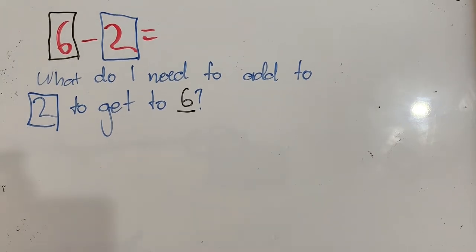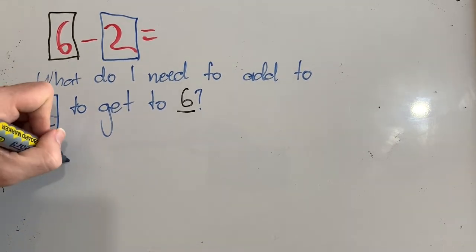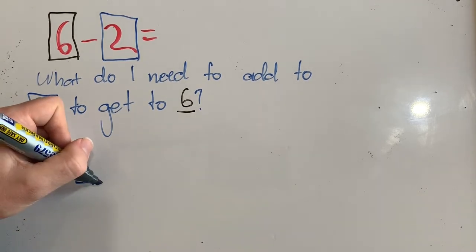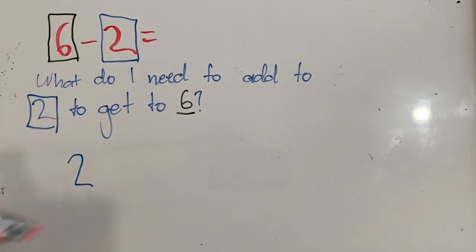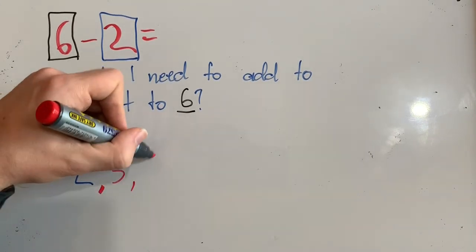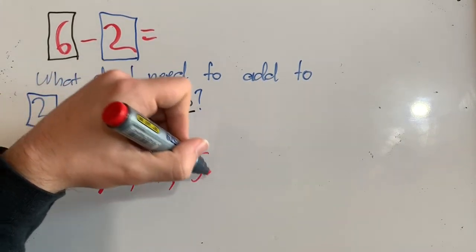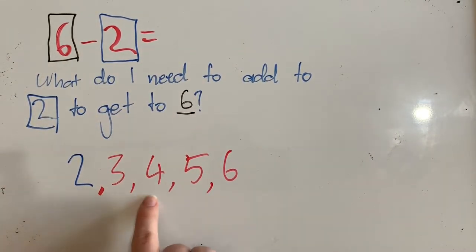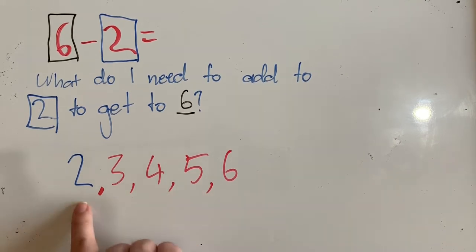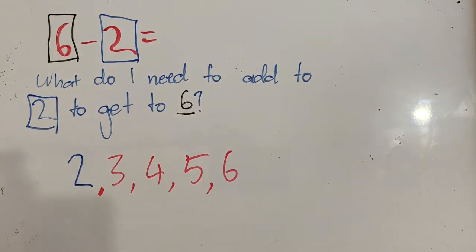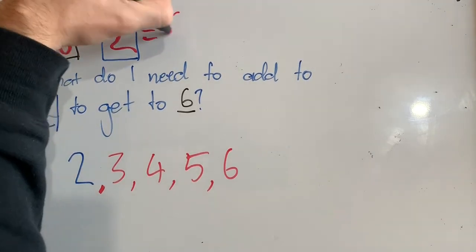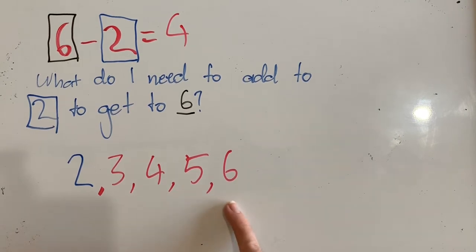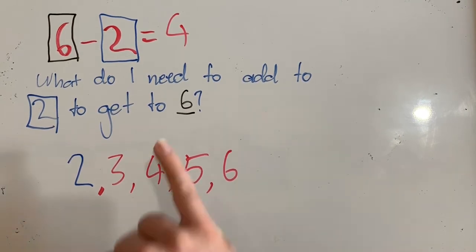I could actually count up for this. So I'm going to start on 2, then I don't count the number that I started on. I count the next one: 3, 4, 5, 6 — and I do count the number that I finish on, which is 6. So I've added 1, 2, 3, 4 to 2 to get to 6. Which means the solution is 4, because 6 minus 2 is 4 — I need to add 4 to 2 to get to 6.